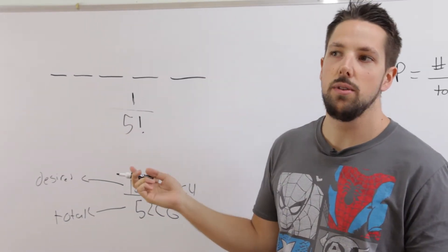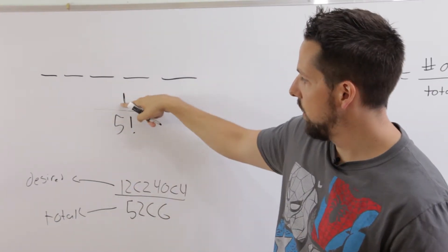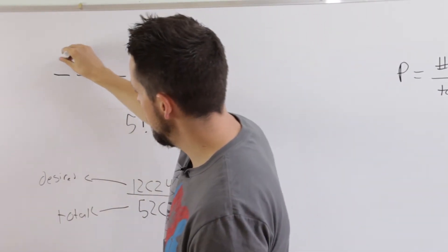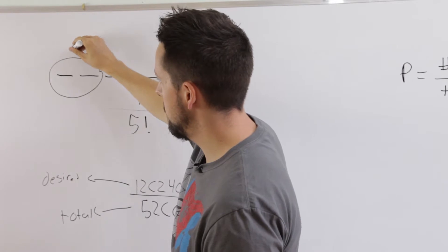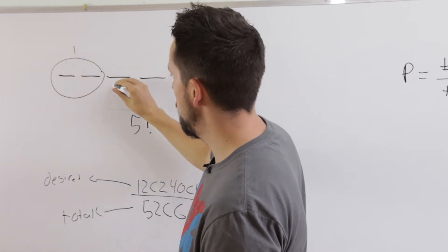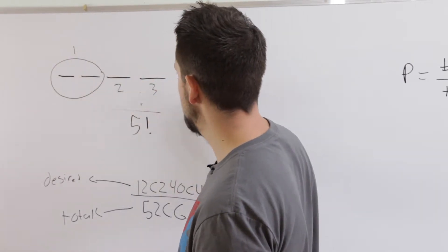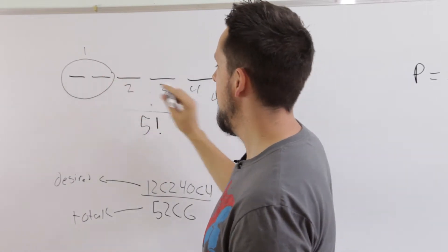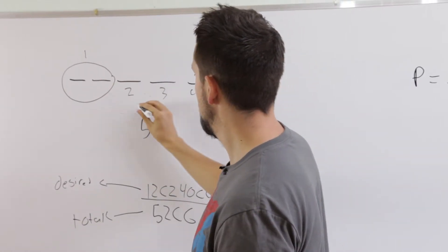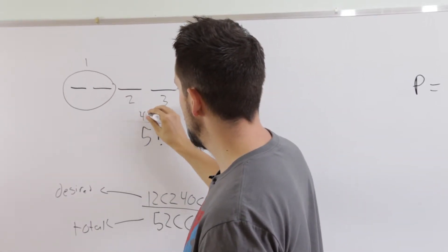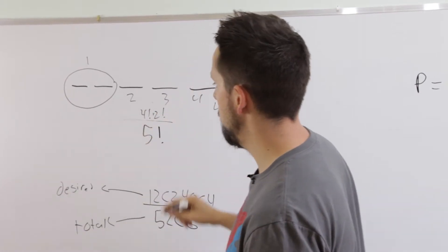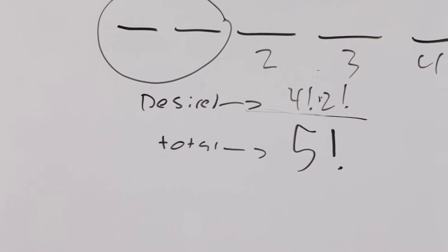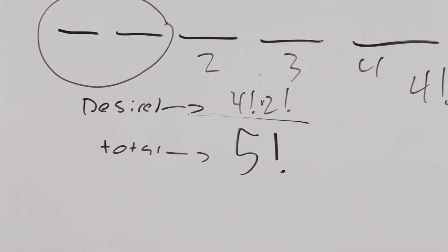What's the probability of the two shortest people standing together? We do the same thing we did in the previous unit — we turn these two into one group. So we have four spaces, meaning four factorial ways they can stand together, and two factorial arrangements within the group. So it's four factorial times two factorial over five factorial. The premise is always the same: desired on top and the total on the bottom.